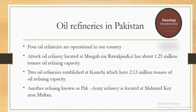Oil refineries in Pakistan - there are four oil refineries in Pakistan which are operational. One is present in Rawalpindi, that is called Attock oil refinery, with capacity of 1.25 million tons. There are two other oil refineries in Karachi with capacity of 2.13 million tons. There is one more oil refinery called PARCO Arab refinery, which is located near Multan. These are four oil refineries operational in Pakistan.